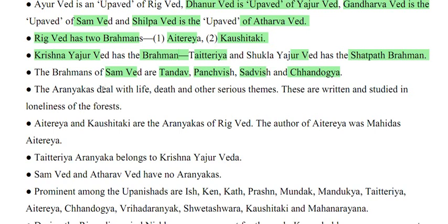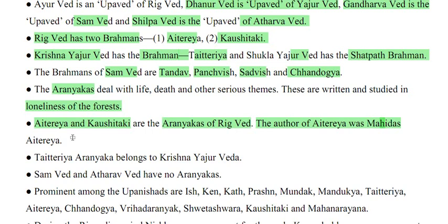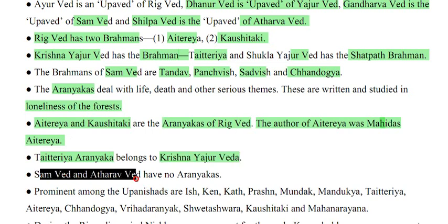The Aranyaks deal with life, death and other serious themes, and are written and studied in the loneliness of the forest. Atri and Kausitki are the Aranyaks of Rigveda; the author of Atri was Mahidas. Atri and Taittiriya Aranyak belong to Krishna Yajurved. Samaved and Atharved have no Aranyaks — please remember this.